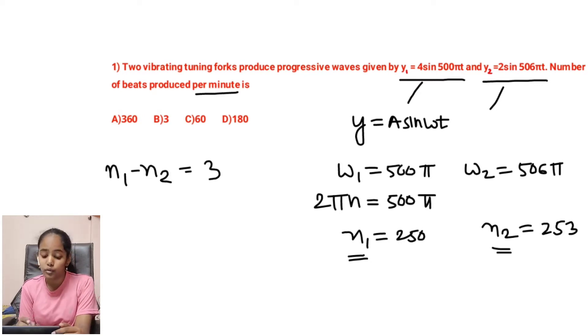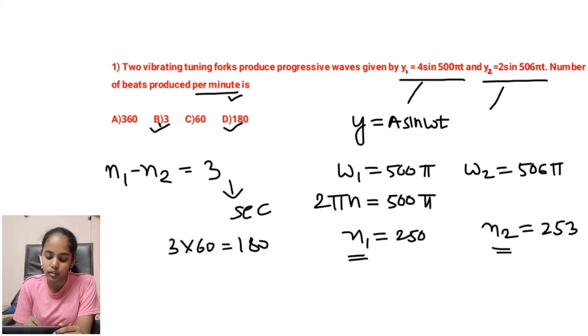With overconfidence, don't go for option B because 3 is per second. They are asking for per minute. So 3 into 60, that is 180. So our option will be 180 but not 3.